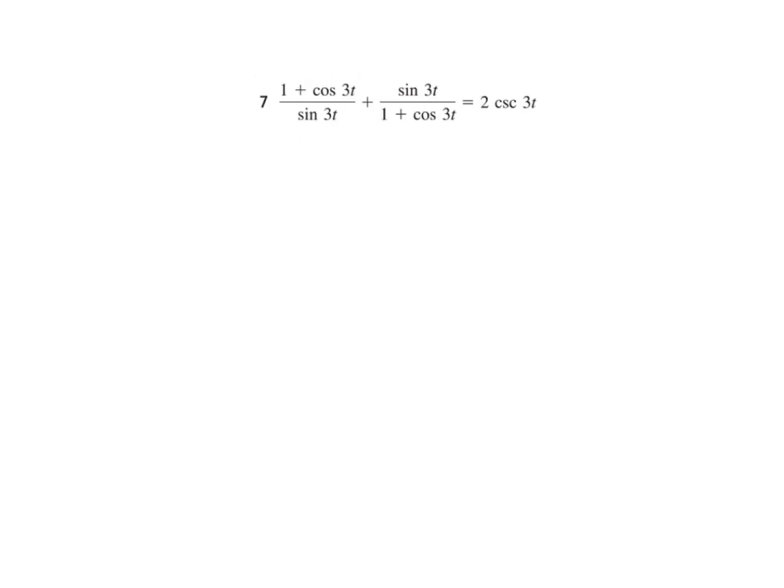Since all the angles are the same, we don't need to worry that it's a triple angle — we can leave those off. We want to get the left side to be 2 cosecant. Usually the more complex side is the best way to start. We need a common denominator on the left side, so we're going to multiply by 1 plus cosine on the left fraction and by sine on the right fraction.